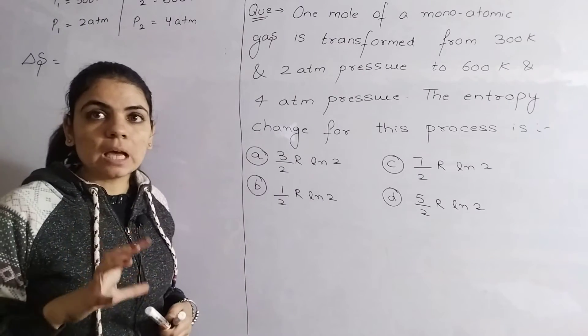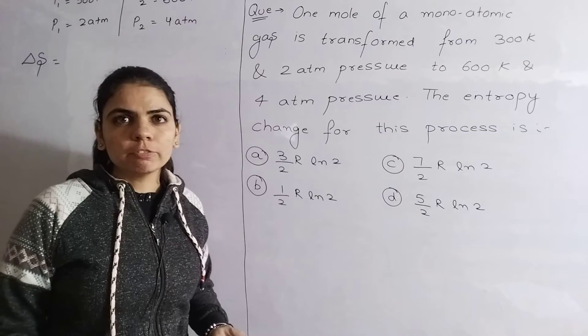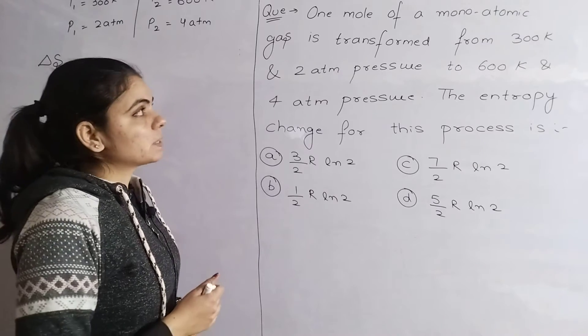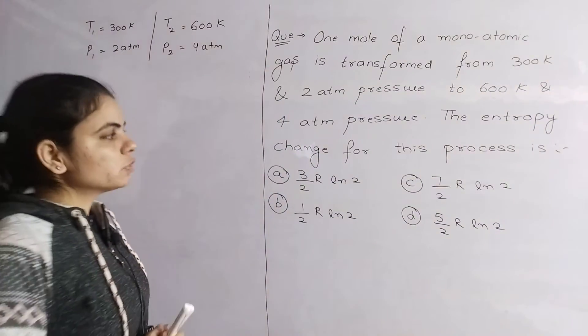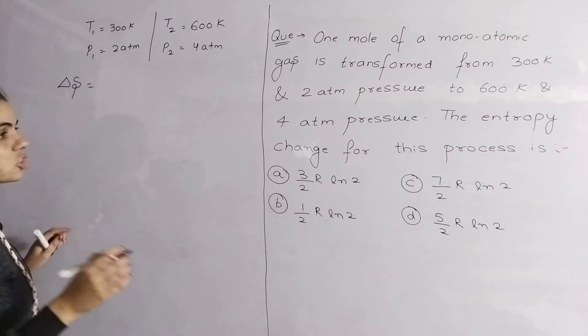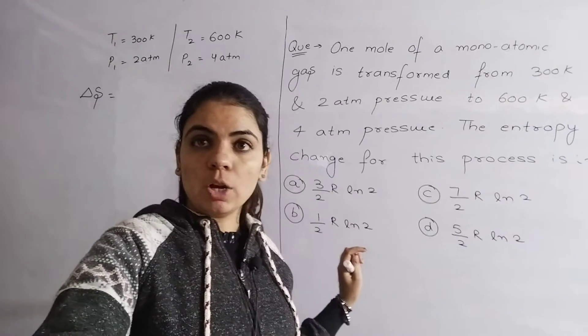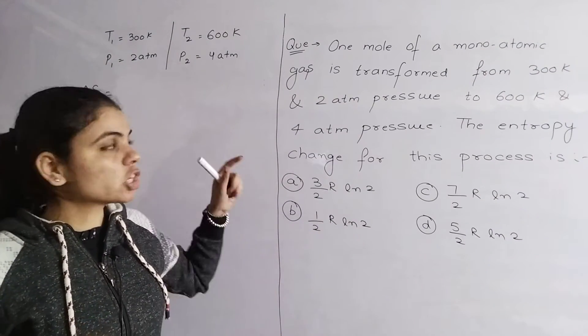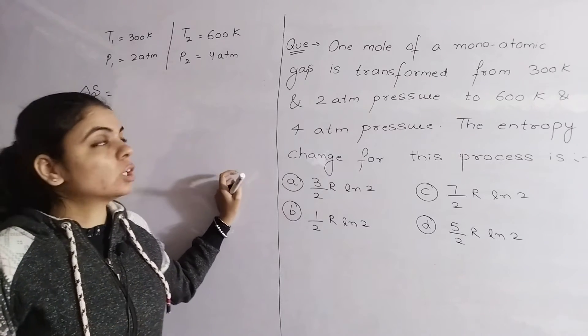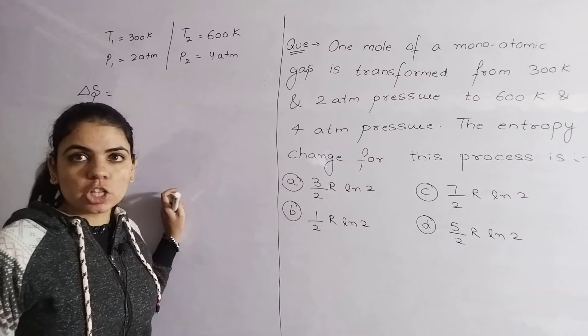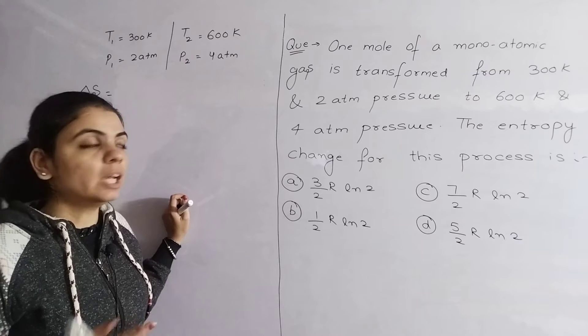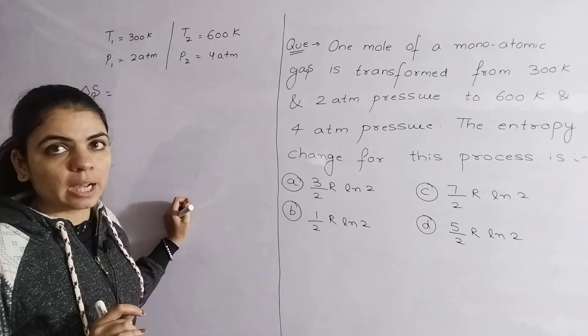In this question we use a particular formula because there are different formulas. When do we use this equation? When we have a temperature change in the process and we have a pressure change in the process, but here it is not given that the process is isobaric, isochoric, or isothermal. There is no process information given. This means that we cannot put any condition on this.